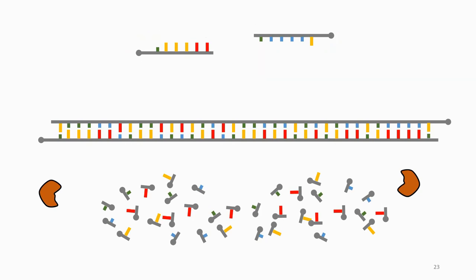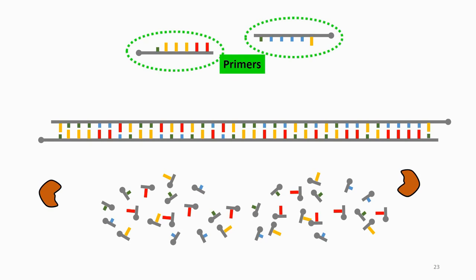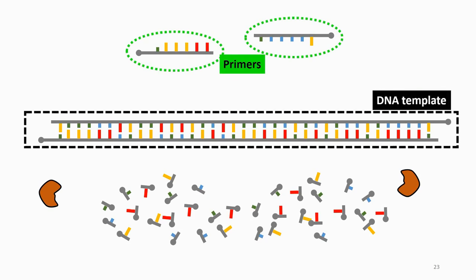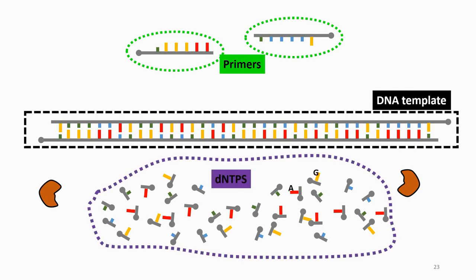In the PCR reaction you have: a primer, which is a short fragment; a DNA template; dNTPs — different nucleotides; and a DNA polymerase. You also have a buffer and magnesium chloride. The buffer optimizes the reaction and keeps the pH constant, while the magnesium chloride activates the DNA polymerase. Everything is dissolved in water.